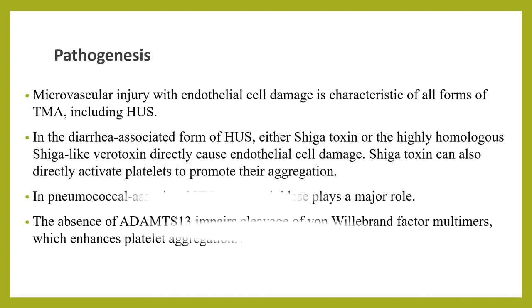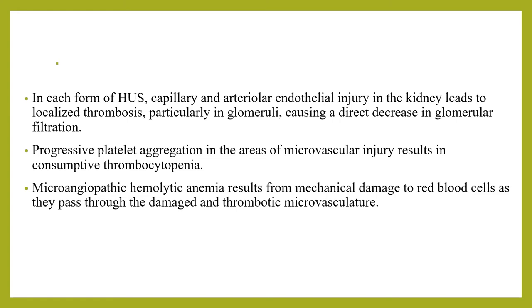In pneumococcal-associated HUS, neuraminidase cleaves sialic acid on membranes of endothelial cells, red cells, and platelets to expose the underlying antigen, causing exposure for IgM antibodies to trigger hemolysis, forming anemia with a positive direct Coombs test. The familial recessive and dominant forms of HUS, including inherited deficiency of ADAMTS13 and dysregulation of the complement cascade, predispose to atypical HUS clinical manifestations. In each form of HUS, capillary and arterial endothelial injury in the kidney leads to localized thrombosis, particularly in the glomerulus, causing a direct decrease in GFR. Progressive platelet aggregation in areas of microvascular injury results in consumptive thrombocytopenia. Microangiopathic hemolytic anemia results from mechanical damage to red cells as they pass through the damaged thrombotic microvasculature.